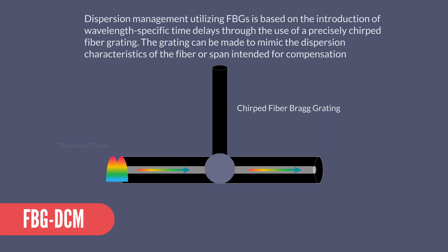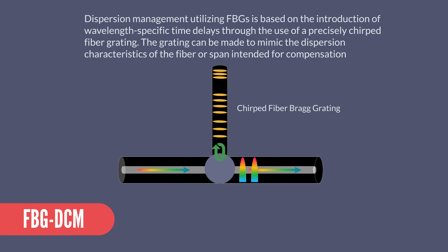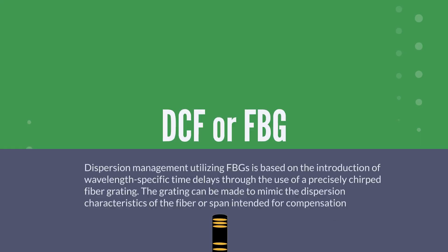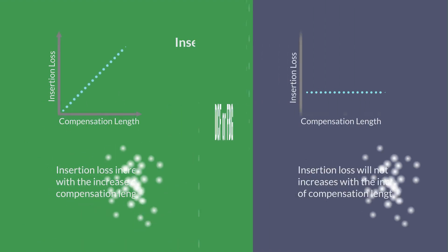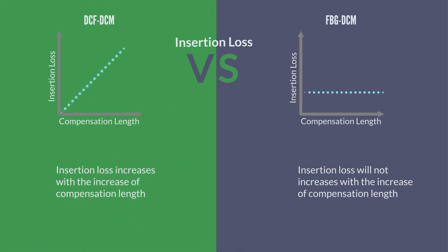A grating introduces wavelength-specific delays. The grating is precisely chirped to mimic the dispersion characteristics of the fiber to be compensated. The low loss enables a higher degree of freedom when optimizing the transmission system.